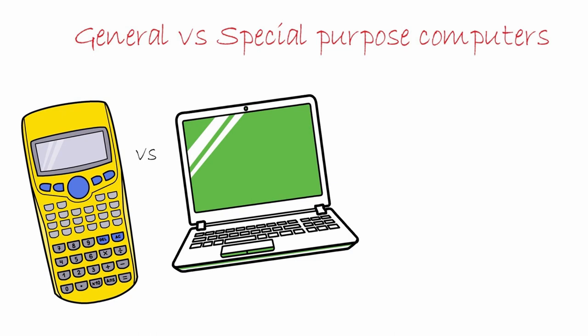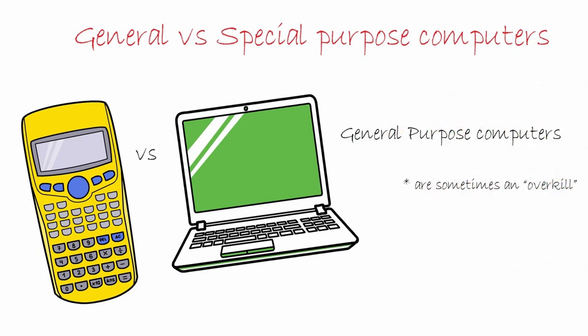What is the point of having special purpose computers when we have general purpose ones? Every year, millions of calculators are sold worldwide because people don't always need a general purpose computer. General purpose computers are sometimes overkill — if you're running a small grocery shop, it's better to use a calculator than a MacBook Pro. General purpose computers are also expensive: a simple calculator costs about $10 compared to a $400 laptop. Additionally, general purpose computers can't do everything — if you're serious about photography, it's better to use a DSLR than a smartphone to get better quality pictures.